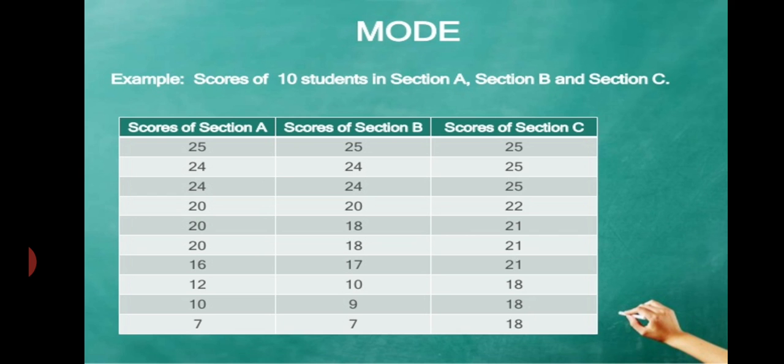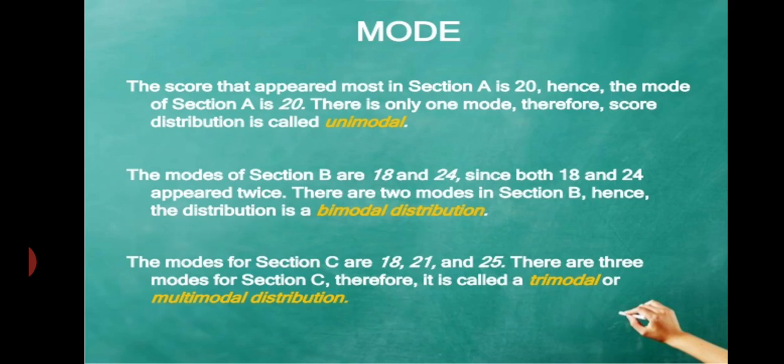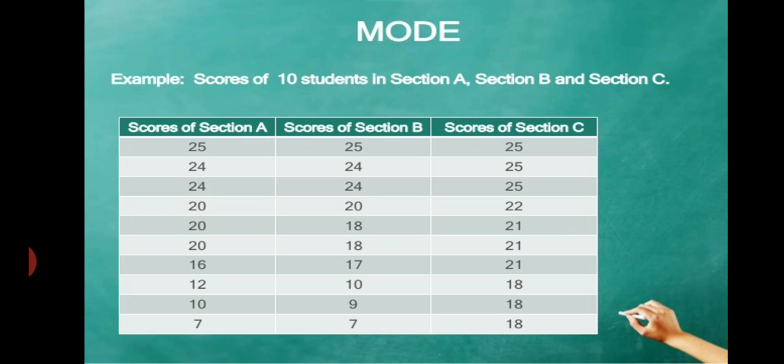Section A, Section B, and Section C are given. The score most appearing in Section A is 20, so the mode of Section A is 20. Mode of B includes 18 and 24. In Section A, the value 24 is repeated once — that is unimodal. In Section B, values 24 and 18 are repeated — that is bimodal. In Section C, three values are repeated — that is trimodal.